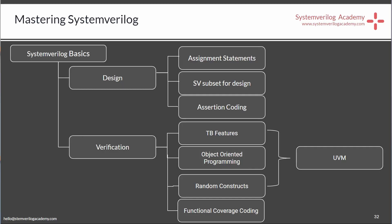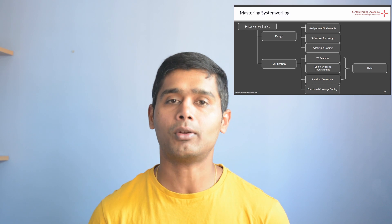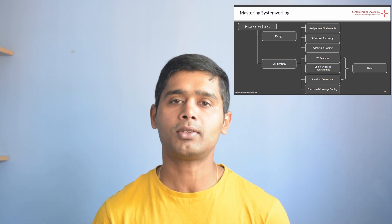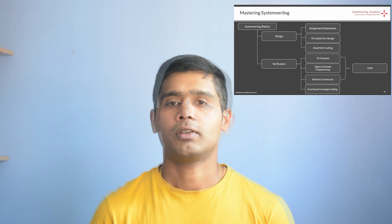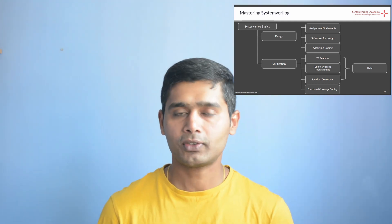For a verification engineer, you need to be comfortable with all the basics of SystemVerilog, including writing simple SystemVerilog designs. You need to learn object-oriented programming concepts in SystemVerilog, random constructs or constrained random construction in SystemVerilog, and functional coverage coding. You also need to learn assertion coding, and if you are planning to become a formal verification engineer, you must be really comfortable writing SystemVerilog assertions. Most importantly, a verification engineer needs to learn UVM — the Universal Verification Methodology — which is widely adopted in the industry and expected even at graduate-level interviews.